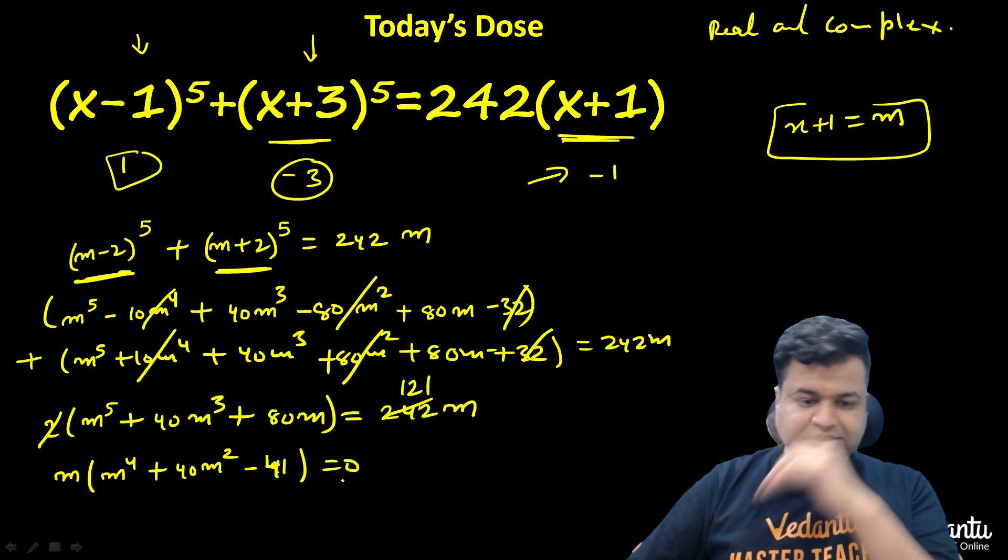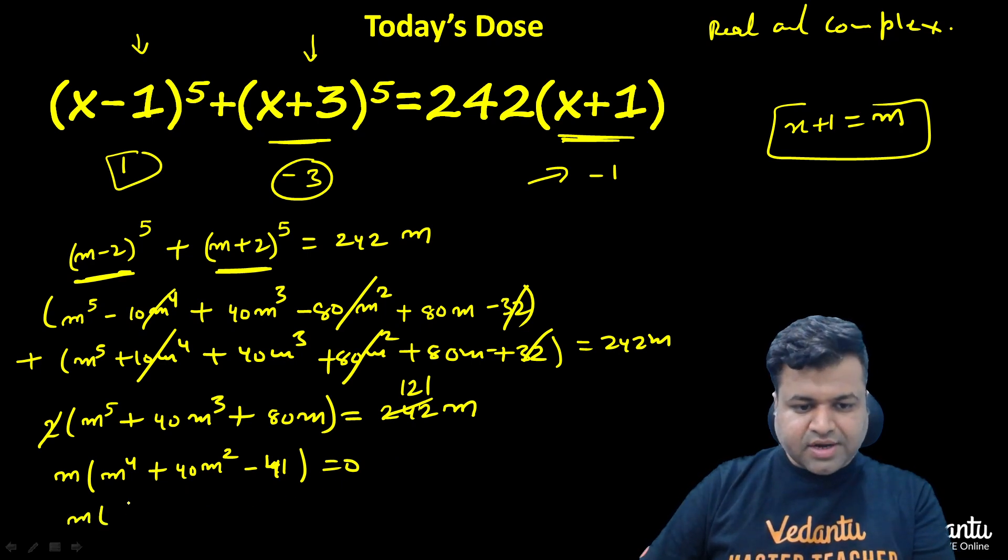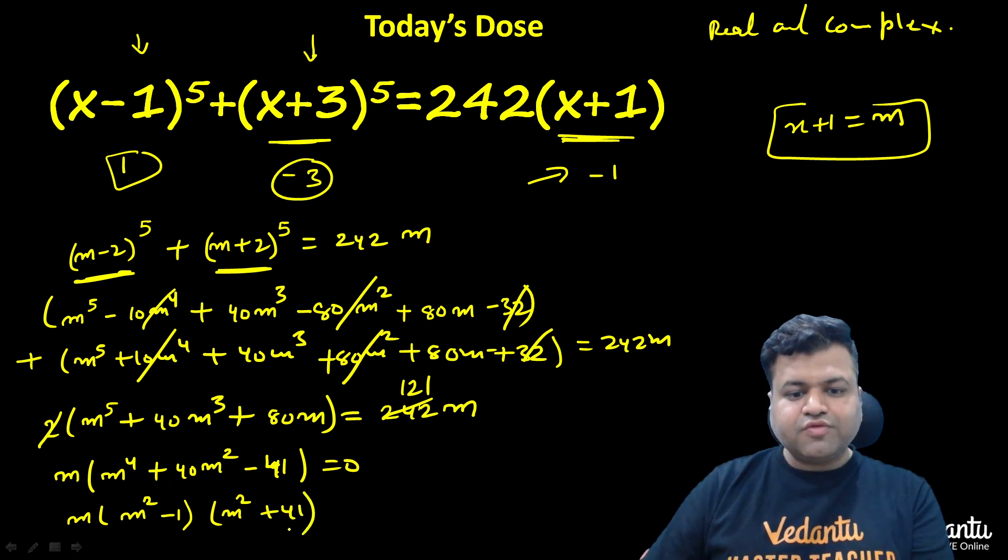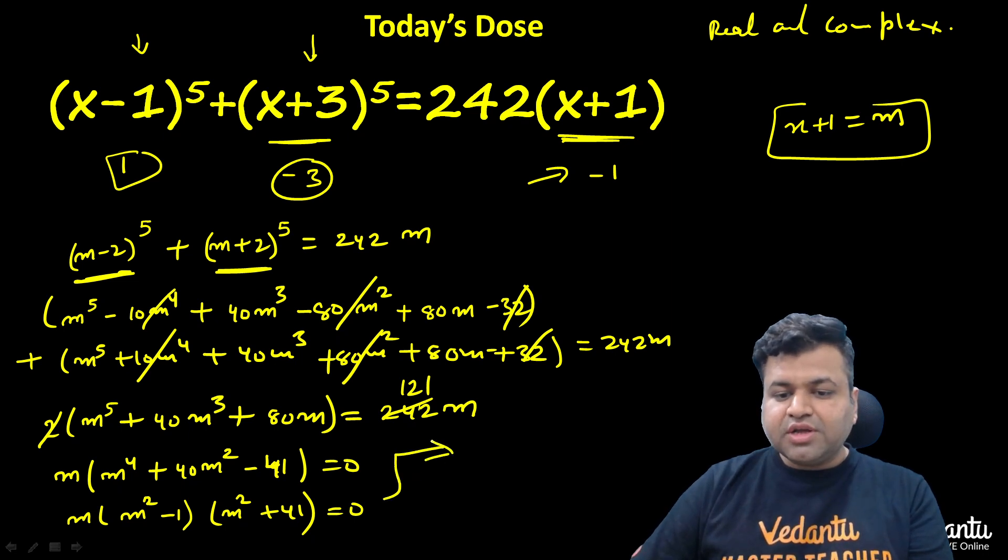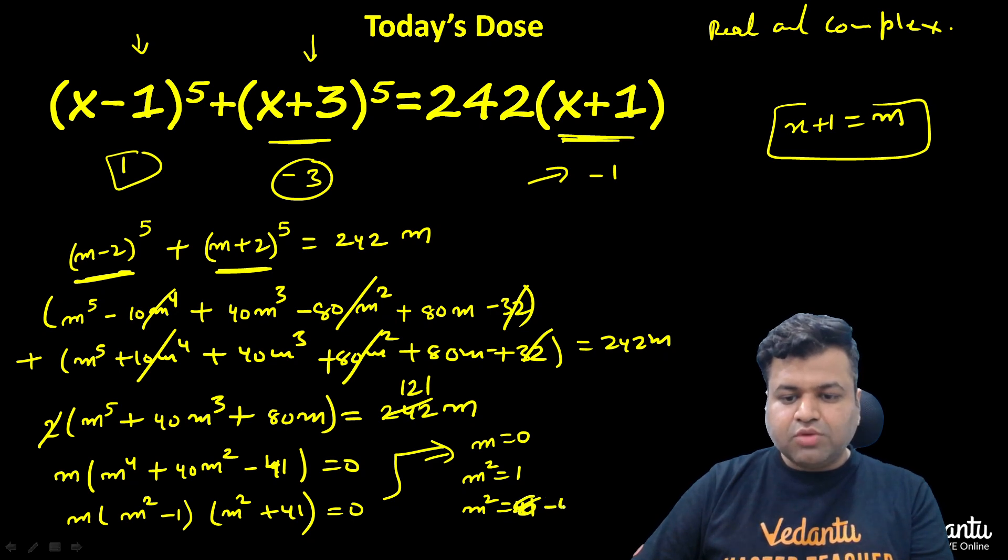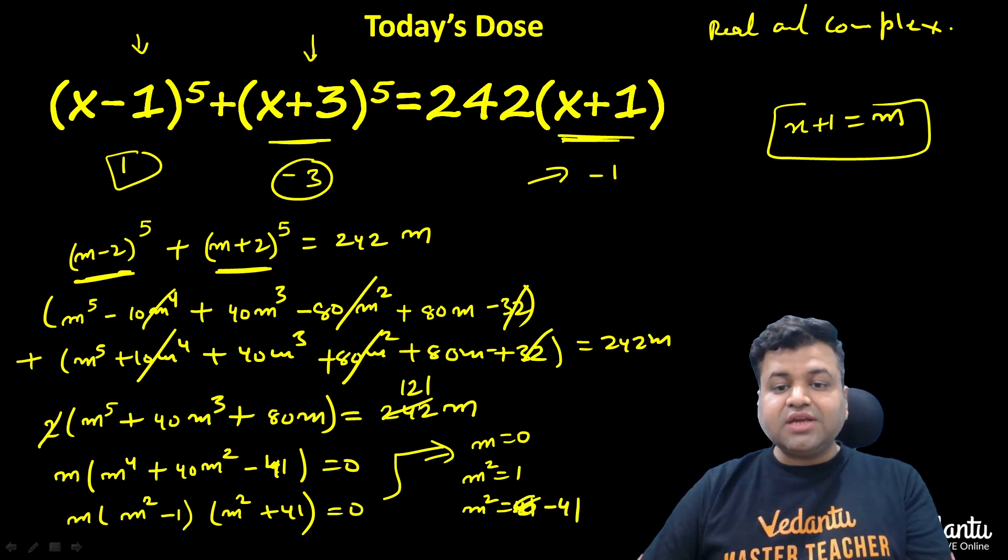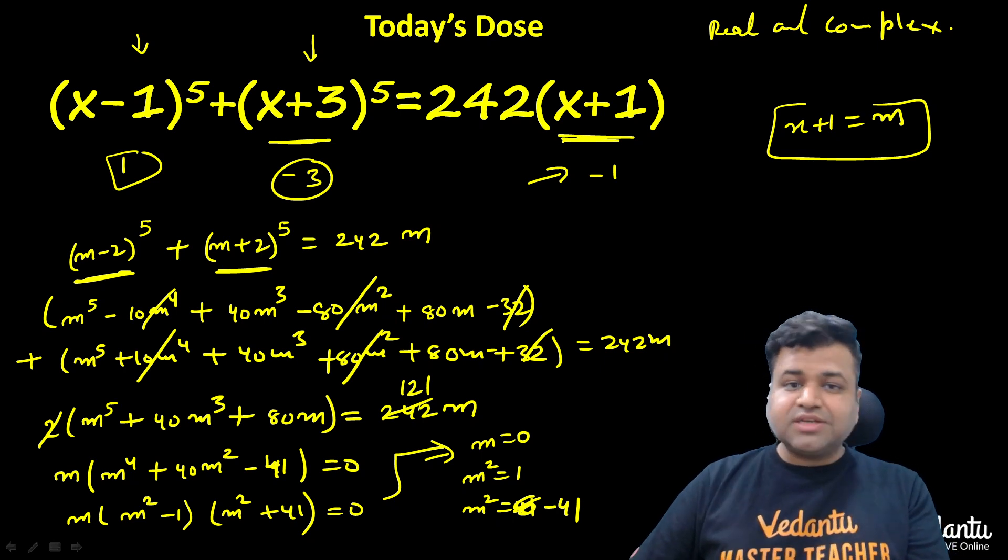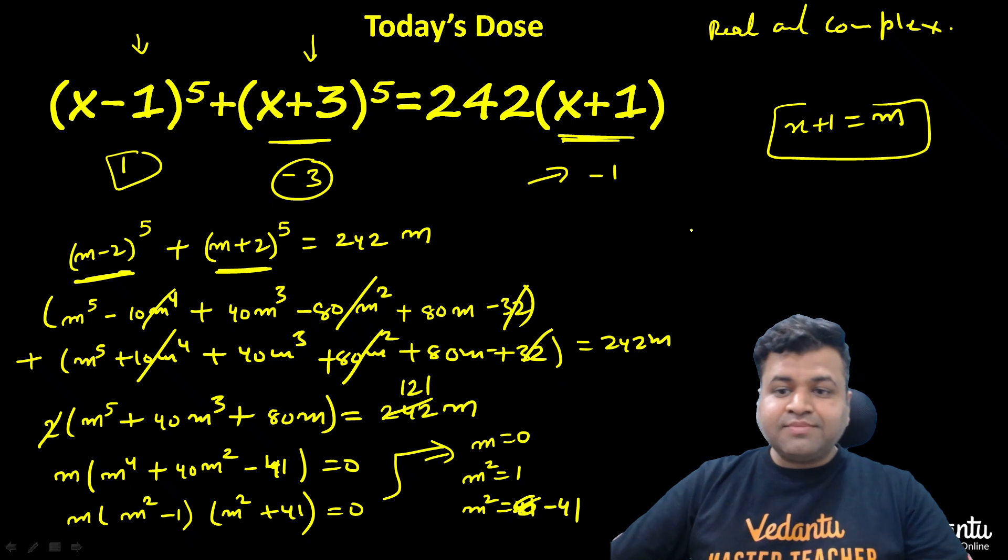Now here we can see each solution. We can further factorize it. This will become m(m^2 + 1)(m^2 - 1)(m^2 + 41) = 0. These are the factors. Now here we can conclude either m will be equal to 0, or m^2 equals to 1, or m^2 equals to -41.